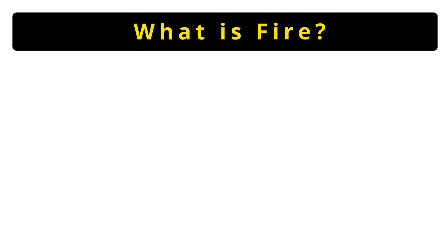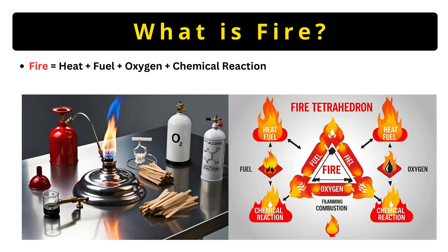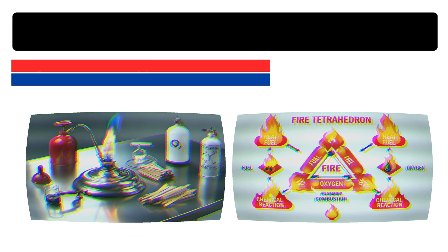Before diving into fire classification, let's quickly recap how fire works. Fire is a chemical reaction that requires four key elements: heat, fuel, oxygen, and an uninterrupted chemical chain reaction. This is known as the fire tetrahedron. Remove any one of these and the fire goes out. Now, depending on the fuel source, fires are categorized into different classes. Let's explore them.